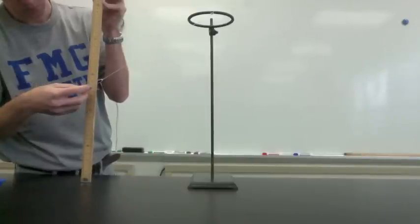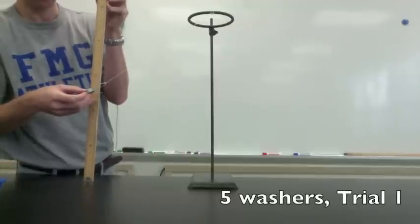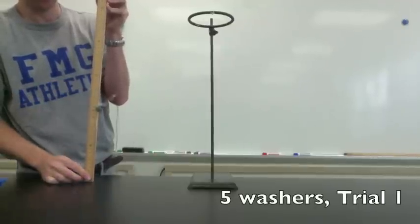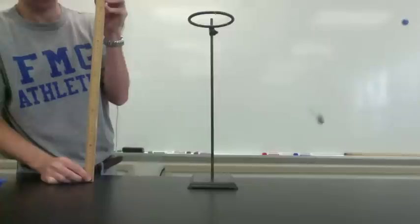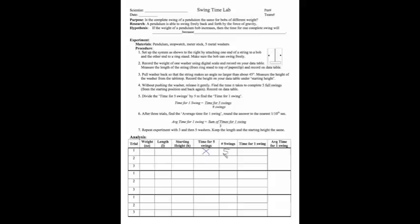Now let's time five complete swings. Ready, set, go. One, two, three, four, five. Record the time for five swings on your data table. We did five swings, so the time for one swing is the time for five swings divided by five.